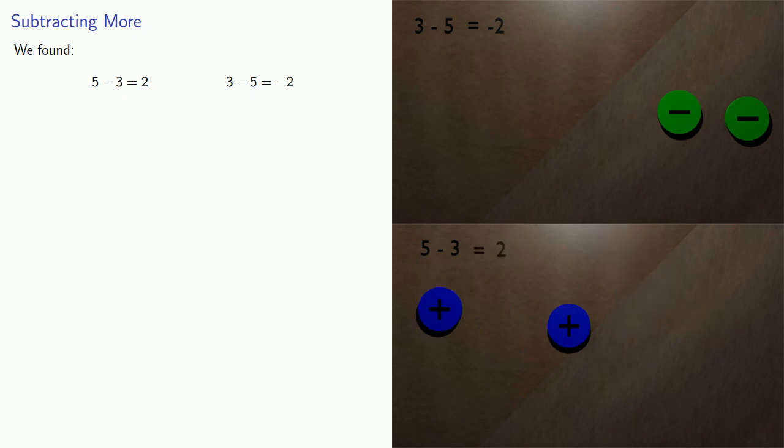which is equal to 2. And if we compare our two subtractions, we see that again they have the same numbers 5, 3, and 2. But two things have changed. We switch the order and we change the sign of the result. And this leads to an important theorem.